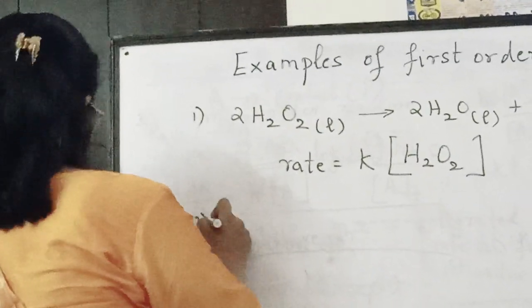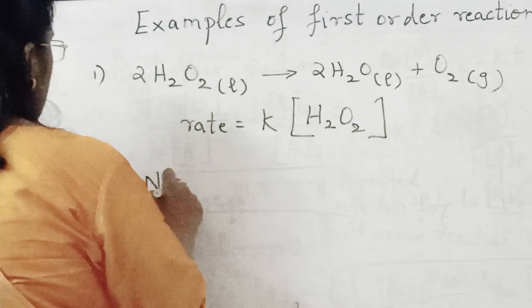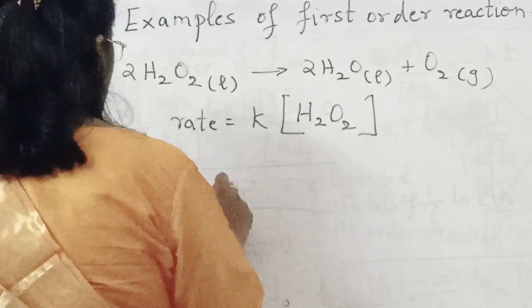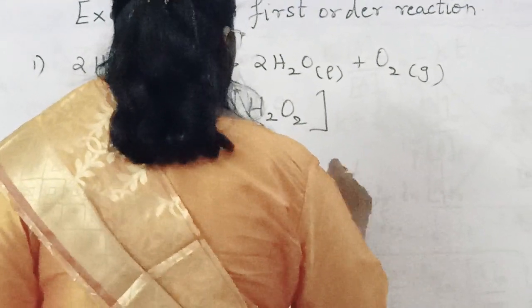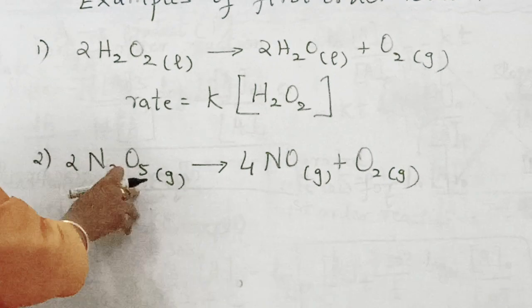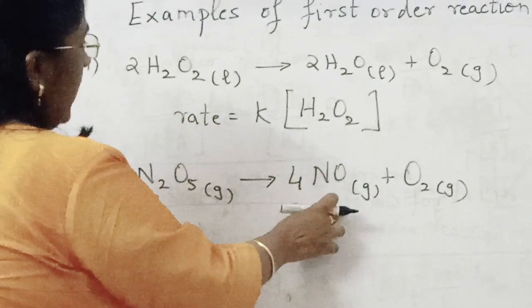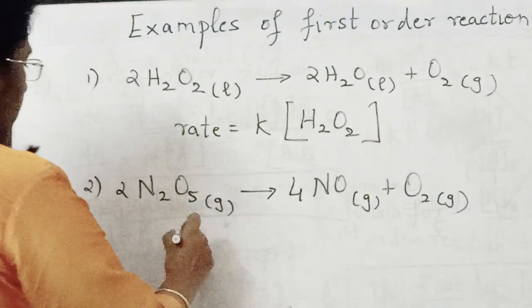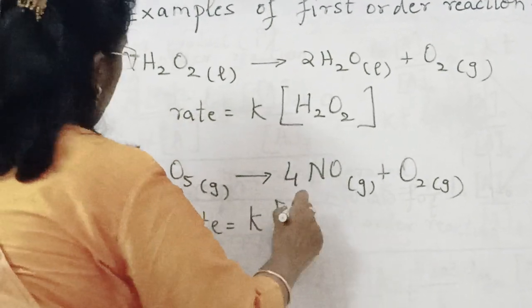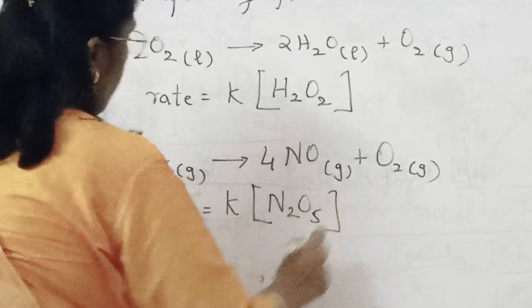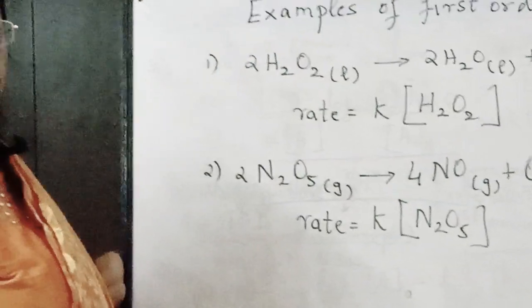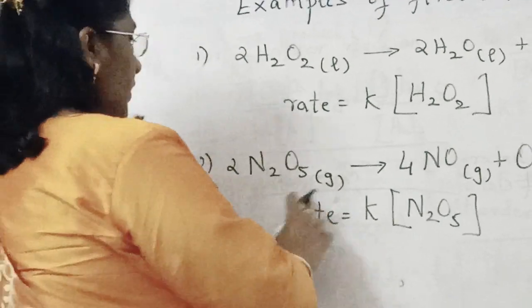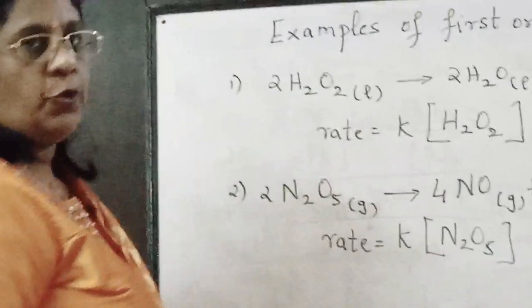Consider another example: 2N₂O₅(g) → 4NO(g) + O₂(g). That is, 2 times nitrogen pentoxide gives 4 times nitric oxide plus oxygen gas. The rate of this reaction is given as rate = K[N₂O₅], since nitrogen pentoxide is the single reactant taken into consideration.